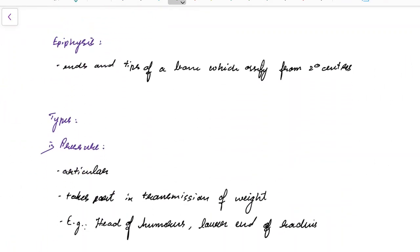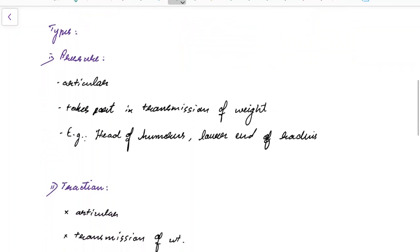Now let us see about Epiphysis in detail. Epiphyses are the ends and tips of a bone which ossify from secondary centers. There are four types of Epiphysis.